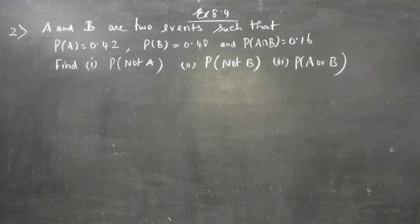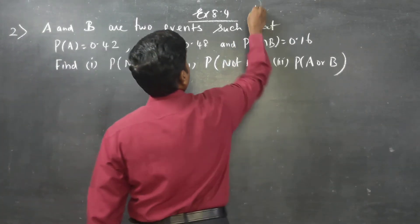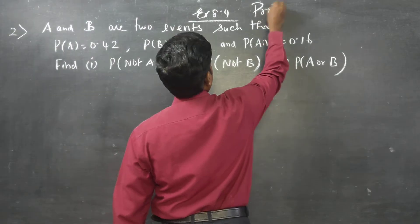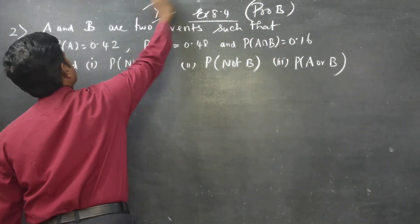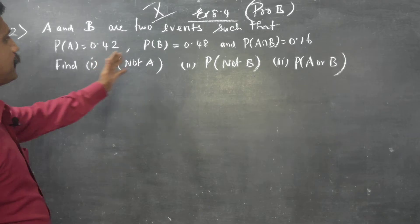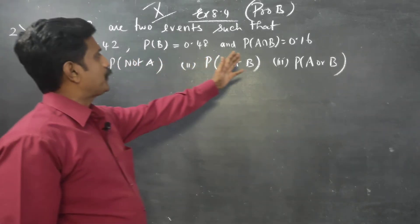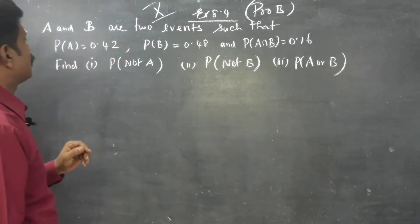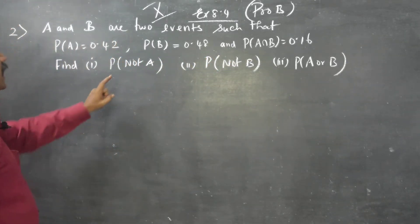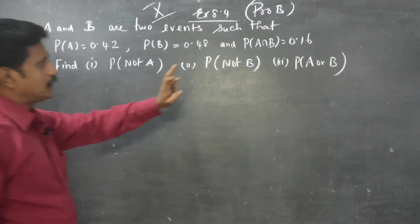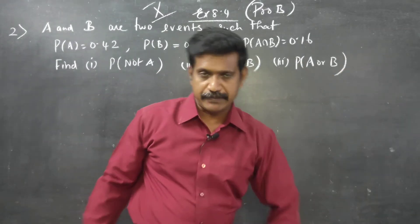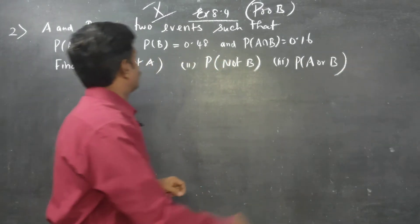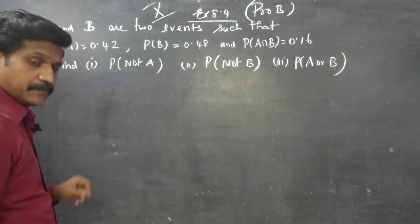This is Exercise 8.4 on Probability for 10th standard. You will be given P(A), P(B), and P(A intersection B), and they will be asking for not A, not B, and A or B. I am going to start with the sum.